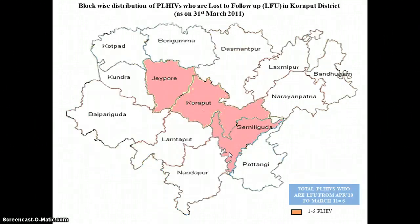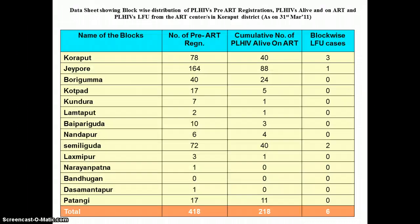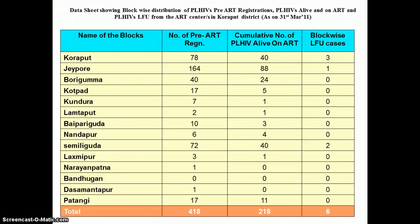This is the block-wise distribution of PLHIVs who are lost to follow-up. This is a summary of the ART data — the number of ART registered, people who are alive on ART, and the total number of LFUs.